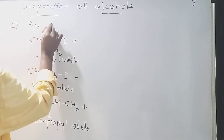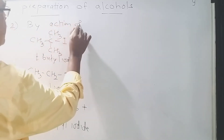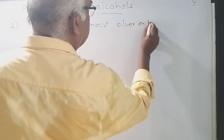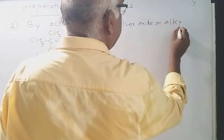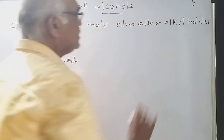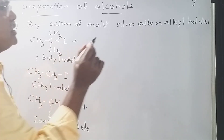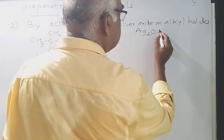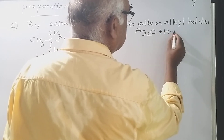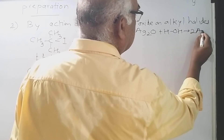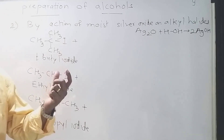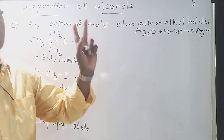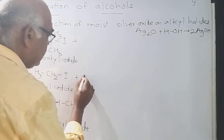So the second method is by the action of moist silver oxide on alkyl halides. Moist silver oxide — Ag2O with H2O — acts similarly to silver hydroxide. Instead of NaOH, we use Ag2O.